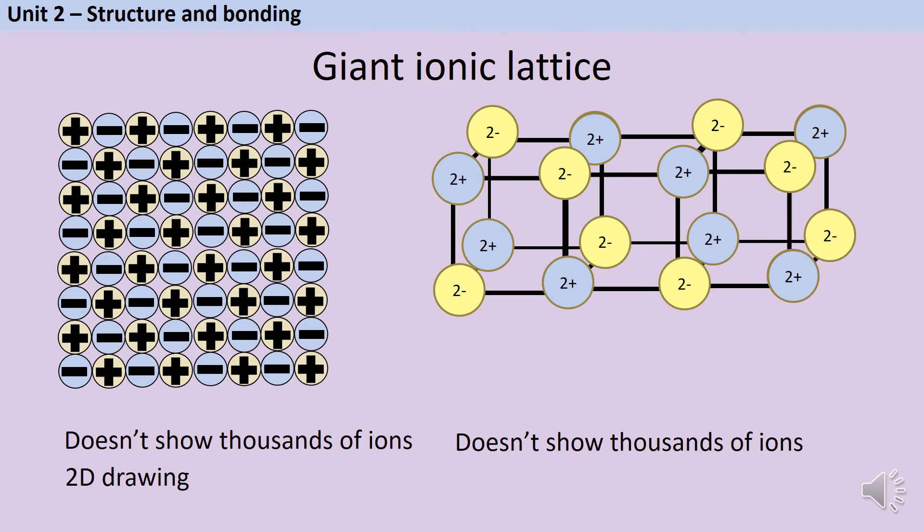However, there is a problem with the diagram on the right, which is that it's got these lines in between the ions, which kind of gives the impression that ionic bonds are physical structures you could reach out and touch. And that's not actually true. The ionic lattice is held together by this strong electrostatic force of attraction that is pulling the ions towards each other. It's not a physical bond that you could reach and grab and hold in your hand.